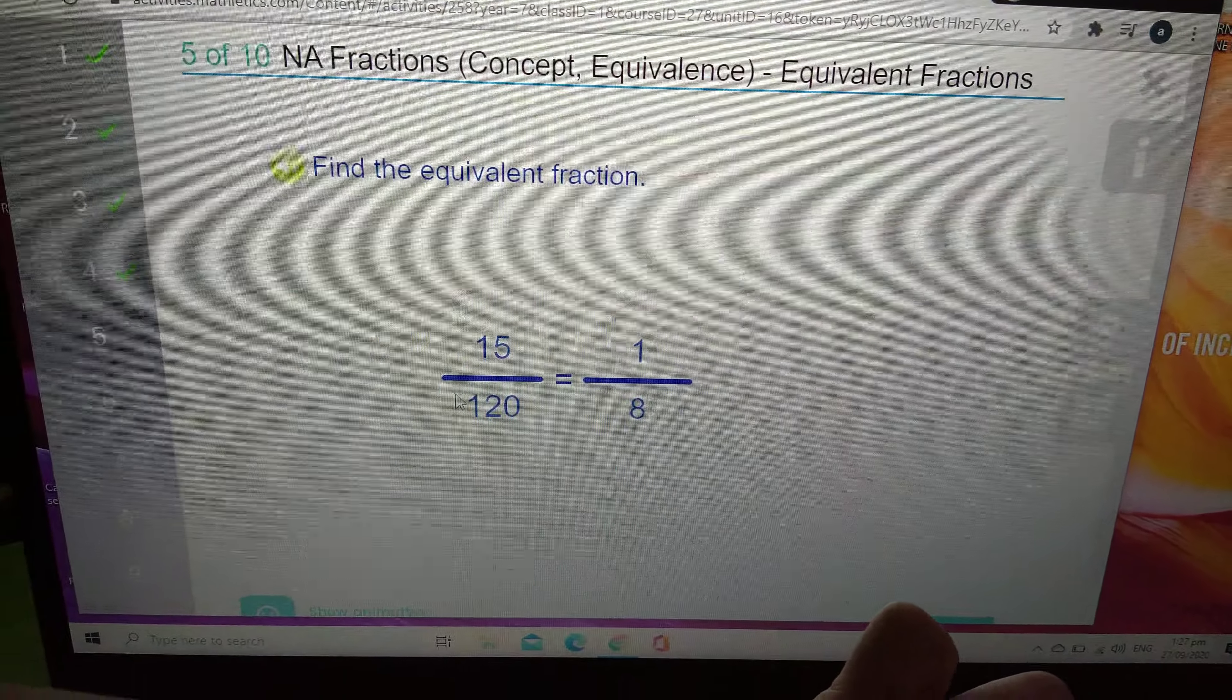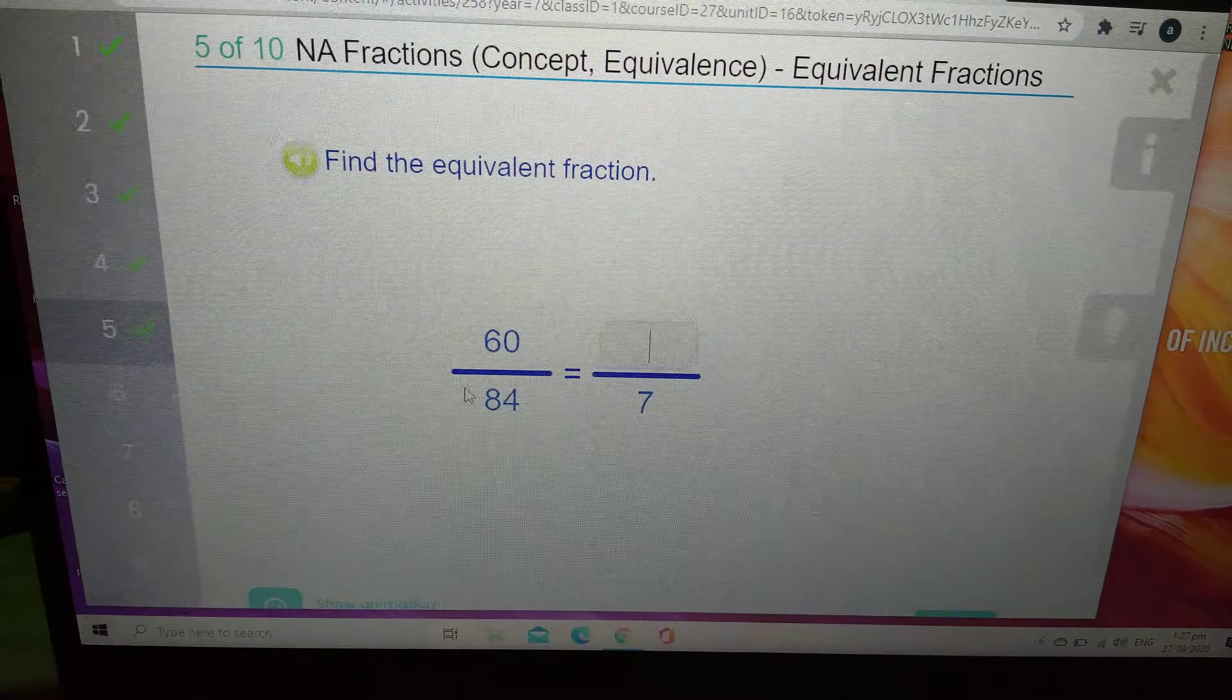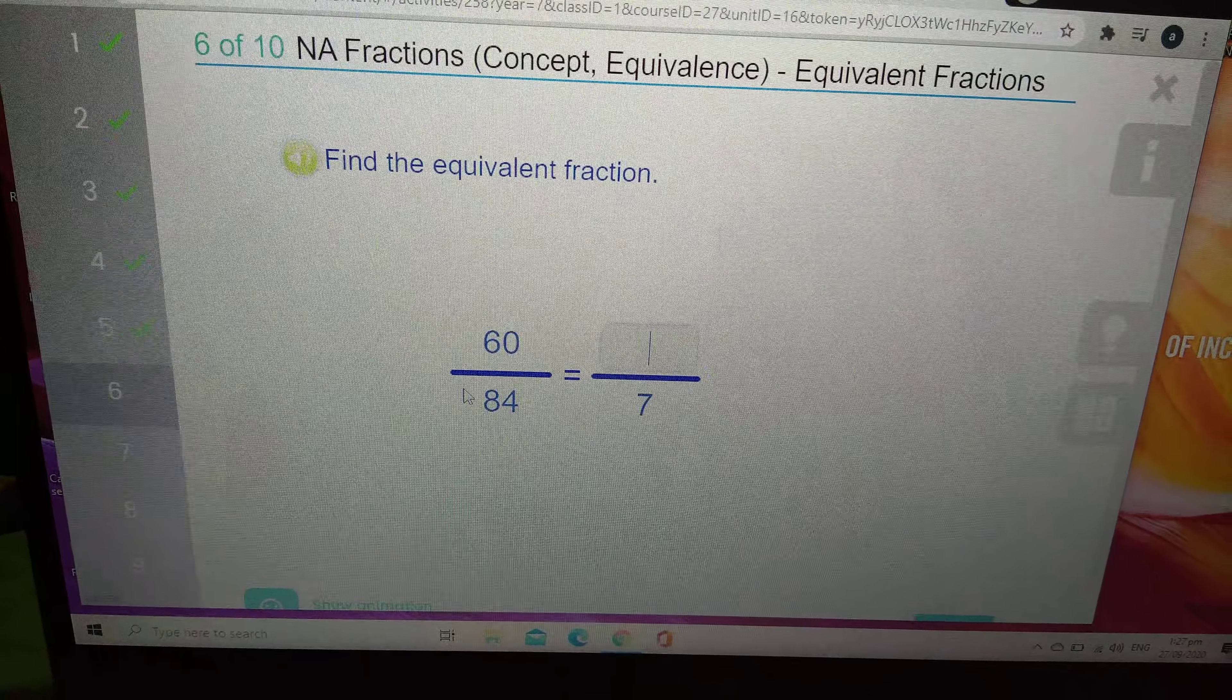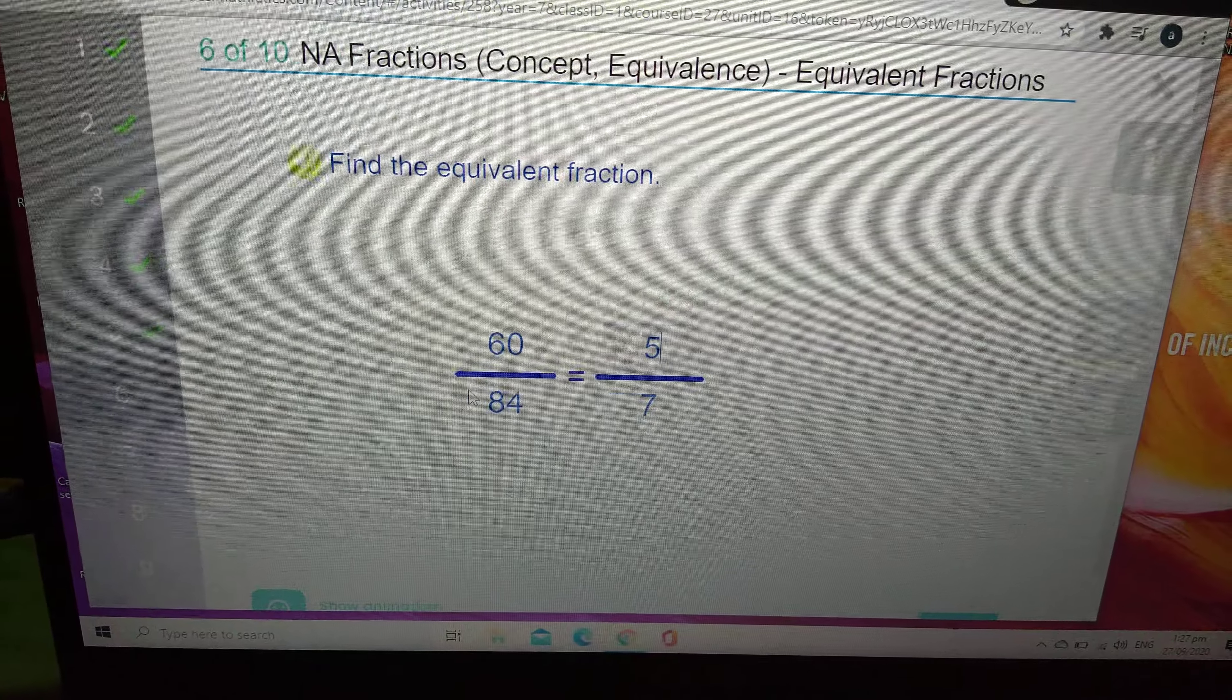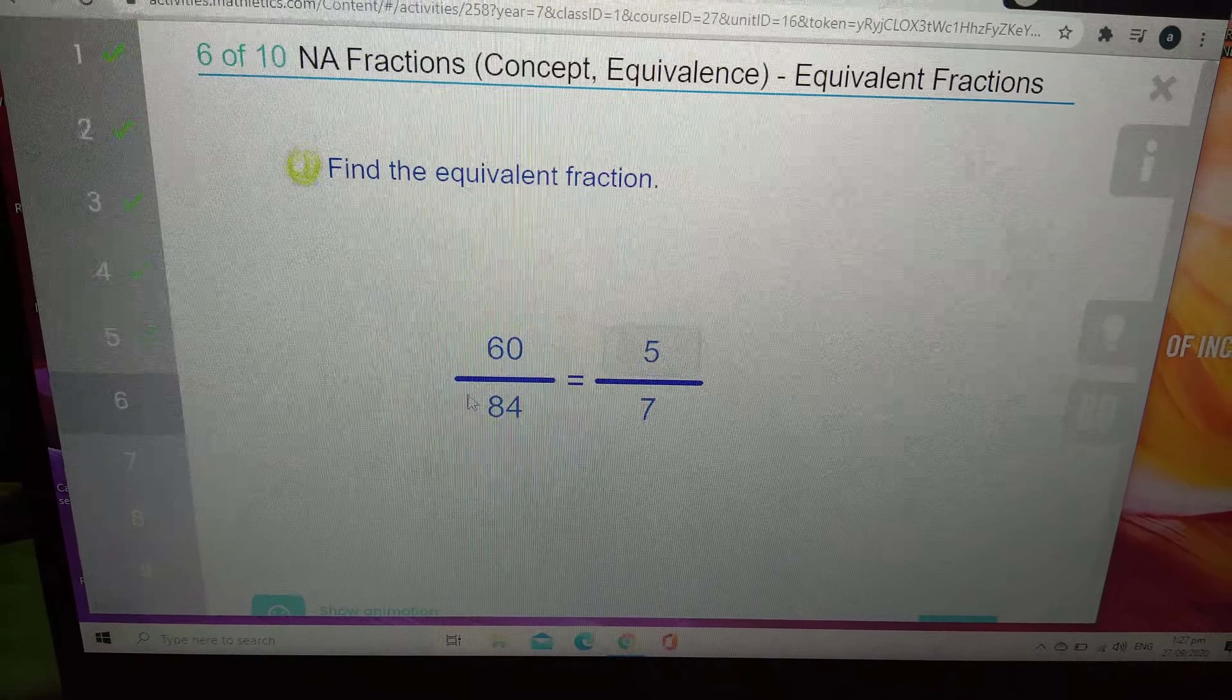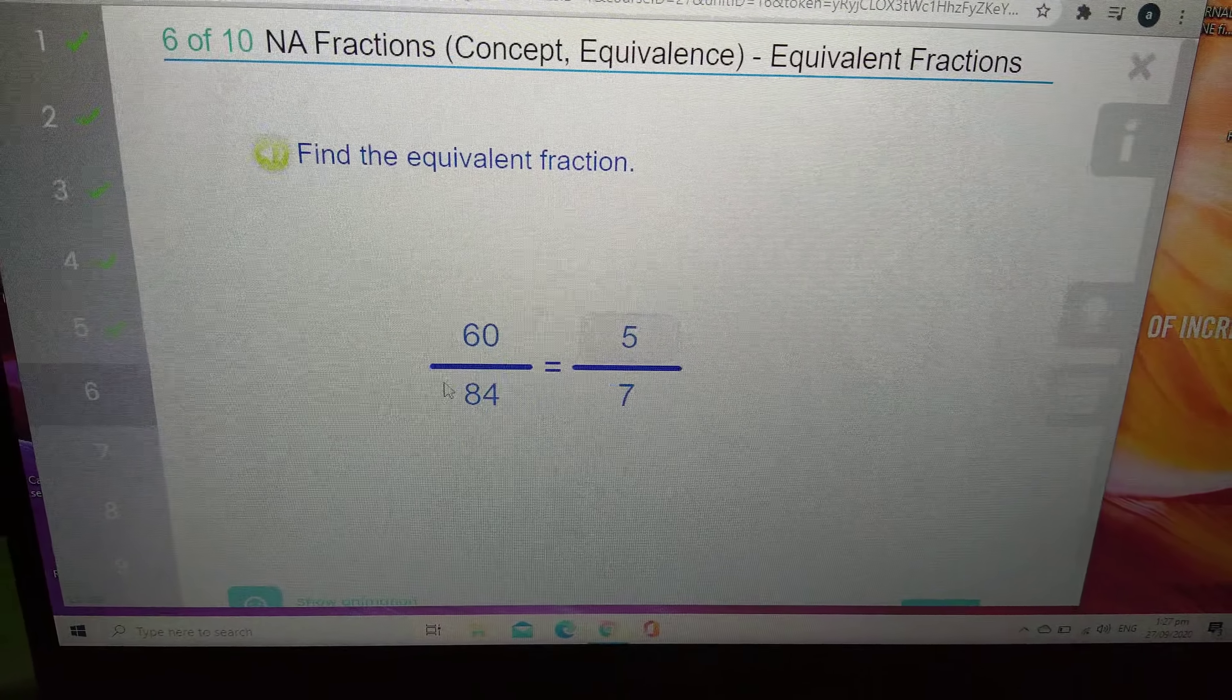Woo! We enter! Amazing, amazing. 60 over 84. There goes 7. Okay. 84, 12. 60 divided by 12. I already know it equals 5.